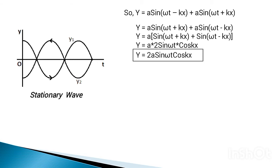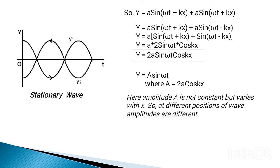This is the required equation of our standing wave. It can also be written as Y equals A* sine(ωt), where A* equals 2A cos(kx) is the amplitude of the resulting standing wave. The amplitude of the resultant standing wave is not constant but varies with x, so at different positions the amplitude of vibration of particles is different.